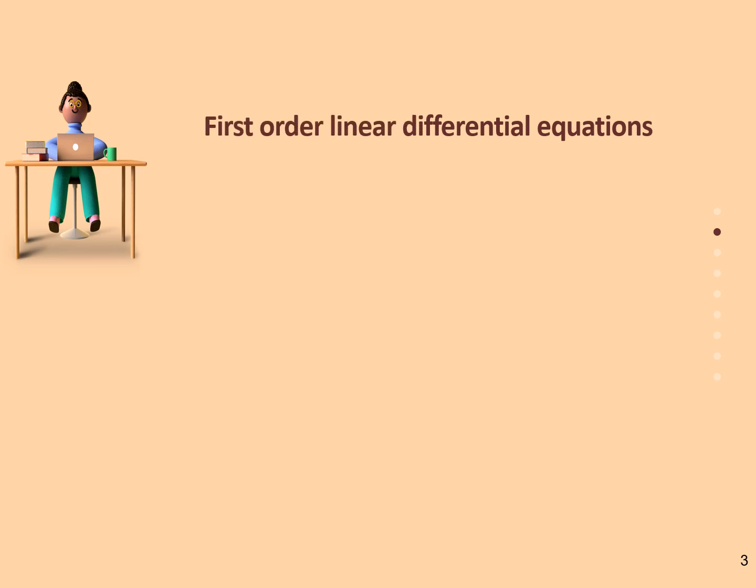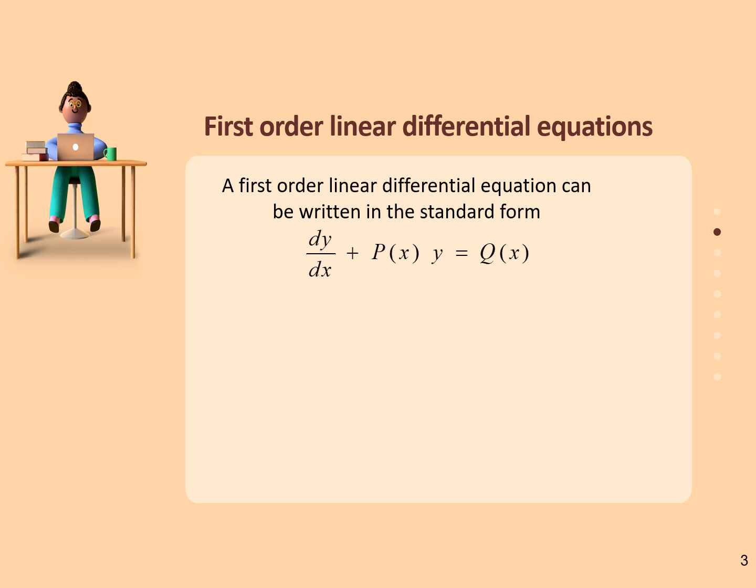First Order Linear Differential Equations. A First Order Linear Differential Equation can be written in the standard form: dy over dx plus p(x) times y equals q(x), where p(x) and q(x) are functions of the variable x.